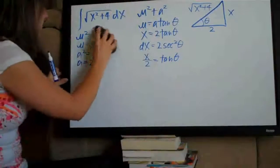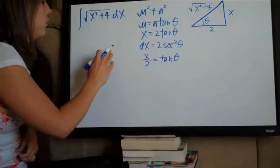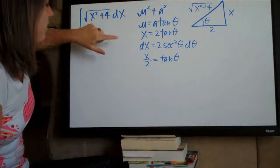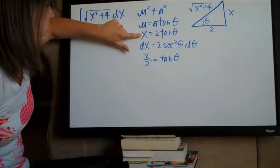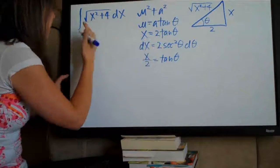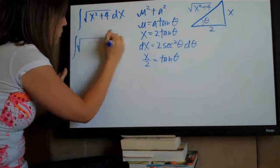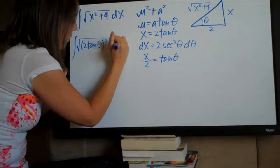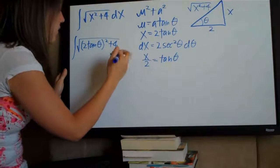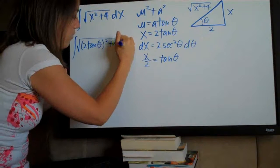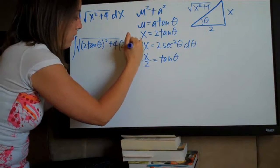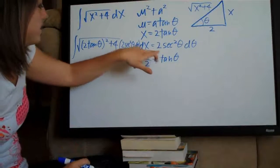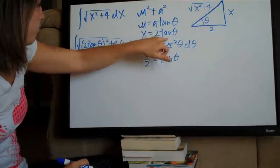Now we're ready to substitute into our problem — and I should note there's a d theta in the derivative. We plug in 2 tangent theta everywhere we have an x, so we get the integral of the square root of 2 tangent theta, quantity squared, plus 4. Then for dx we multiply by 2 secant squared theta d theta, since that's what we found for the derivative of x.